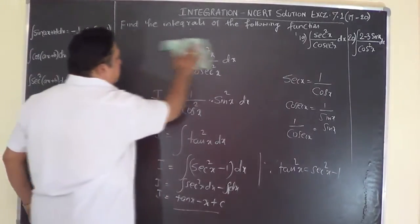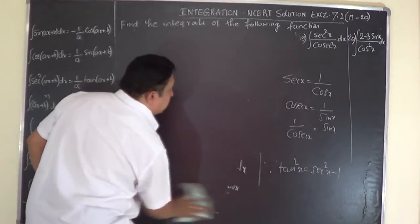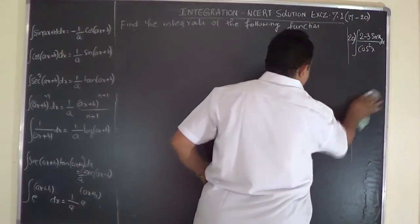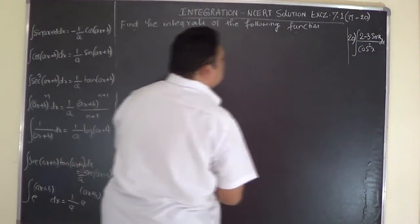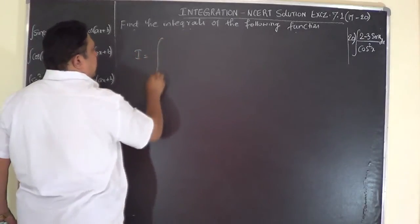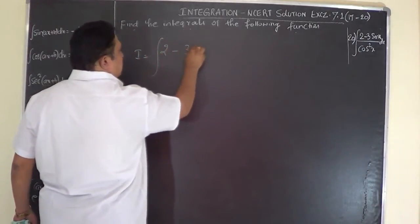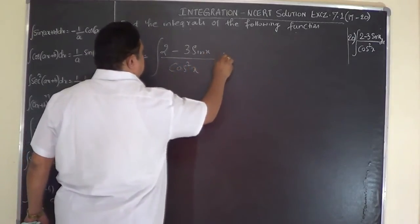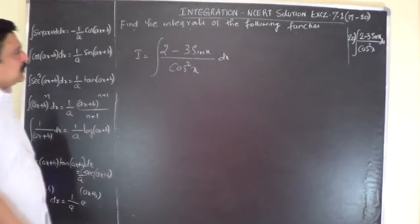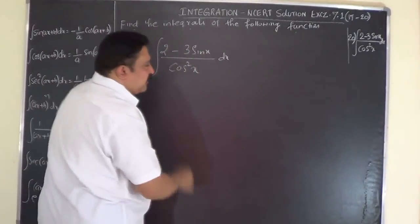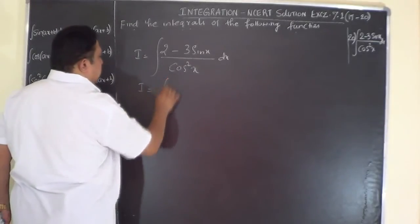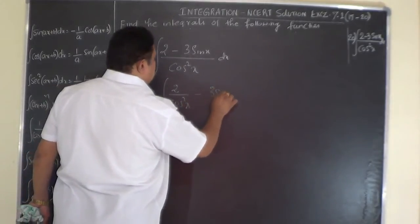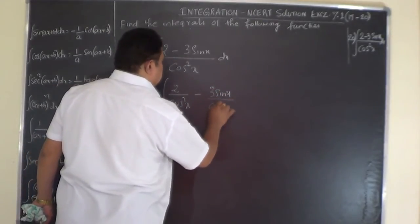Now the last problem, problem 20: I equals integral of (2 minus 3 sin x) over cos squared x dx. This is straightforward — separate the terms. I equals integral of 2 over cos squared x dx minus integral of 3 sin x over cos squared x dx.